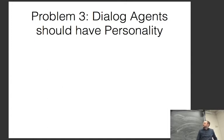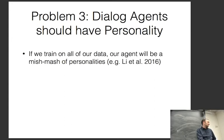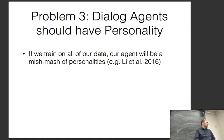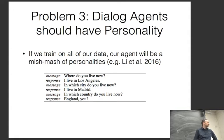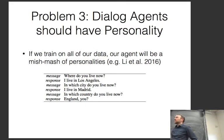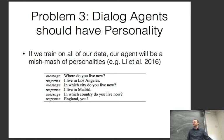Problem three: dialogue agents should have personality — more importantly, dialogue agents should be consistent. If we train on all our data, our agent will be a mishmash of personalities. For example: 'Where do you live now?' — 'I live in Los Angeles.' 'In what city do you live now?' — 'I live in Madrid.' 'In which country do you live now?' — 'England.' None of these are consistent with each other. This is a problem if you want to make anything that people will feel is plausible.